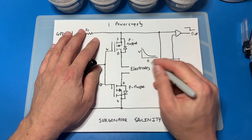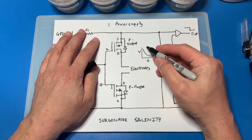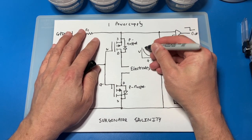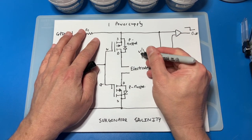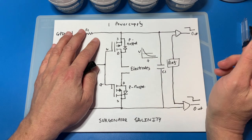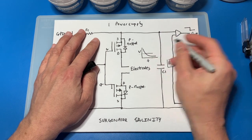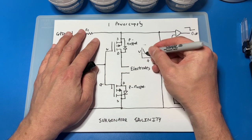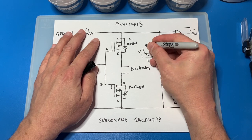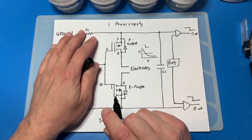So essentially what happens is as the capacitor discharges, there's a decay time. If we pick the reference as a halfway point, say there, then essentially that signal will come out on there. This will be high until the voltage drops down below that point and then it goes off.